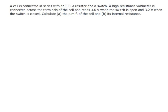A cell is connected in series with an 8 ohm resistor and a switch. A high resistance voltmeter is connected across the terminals and it reads 3.6 volts when the switch is open and 3.2 volts when the switch is closed. Calculate the EMF of the cell and its internal resistance.